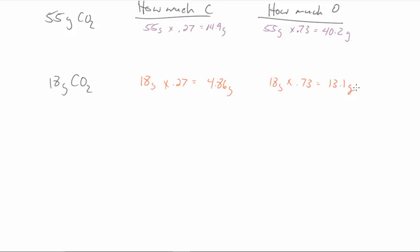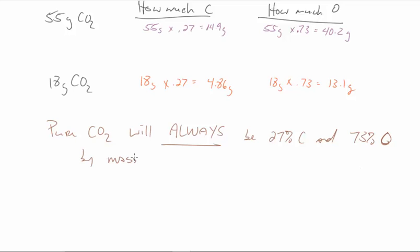And so how do we use law of definite proportions? We can definitely use the law of definite proportions to figure out how much of an element is present in a sample. And this gets us into empirical formulas, allows us to start looking at the purity of samples, because let's think about the purity here. Pure CO2 will always, and I'm capitalizing always, and I'm going to underline it, be 27% carbon and 73% oxygen by mass.